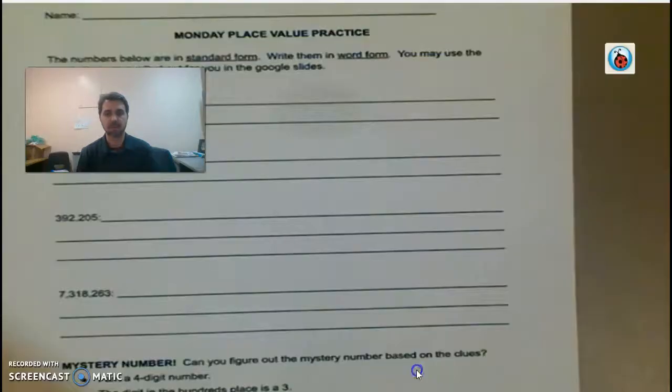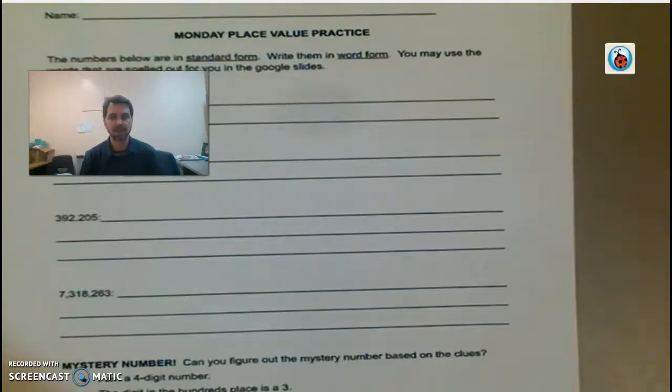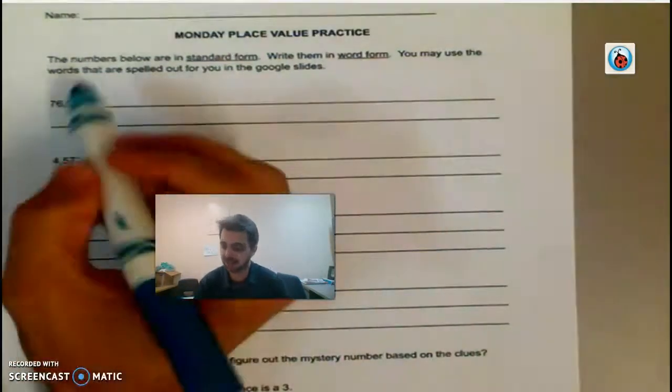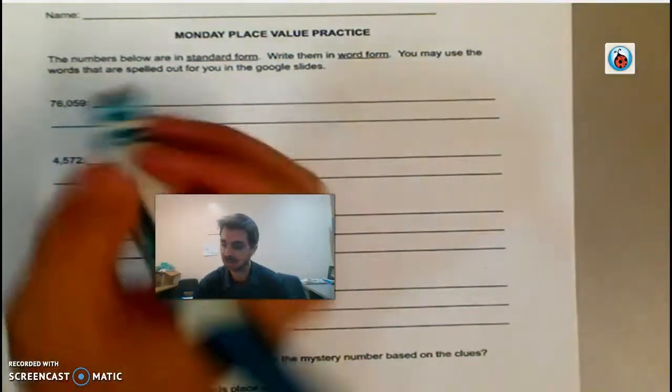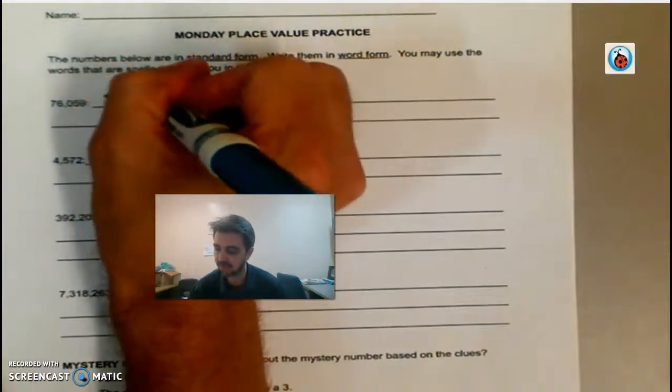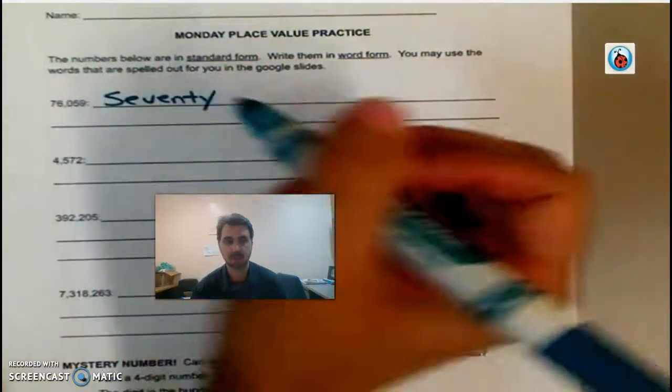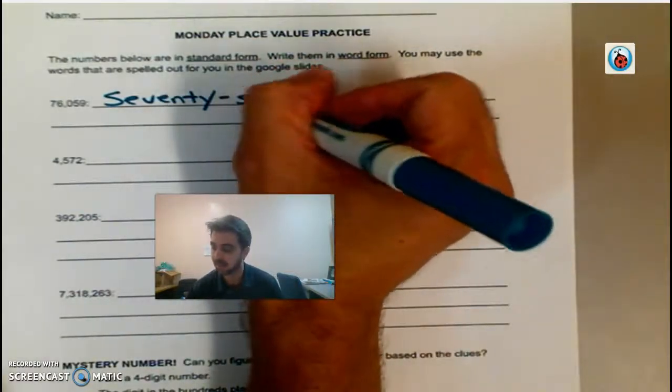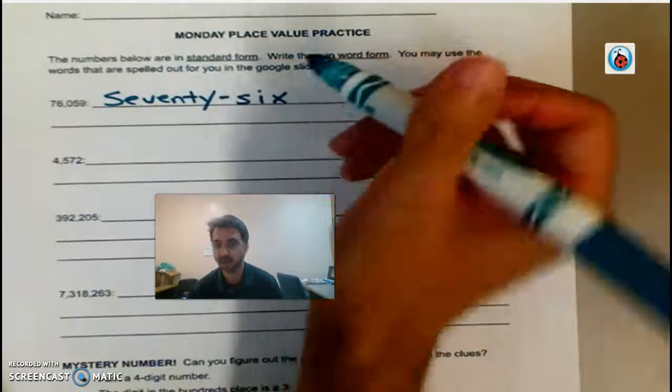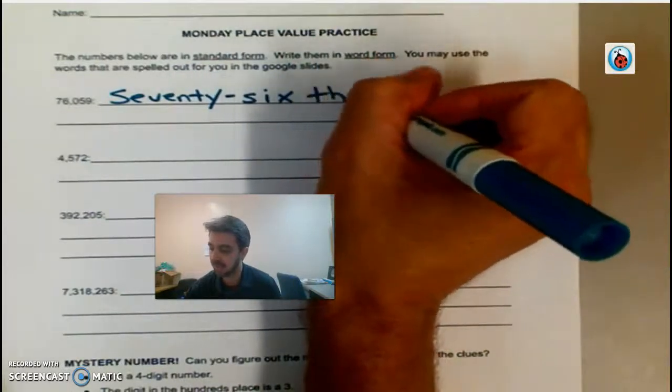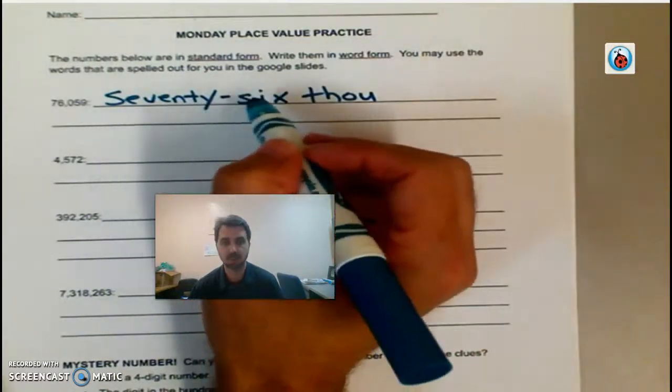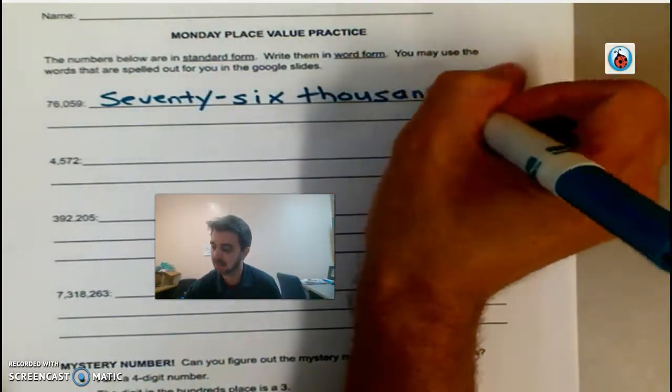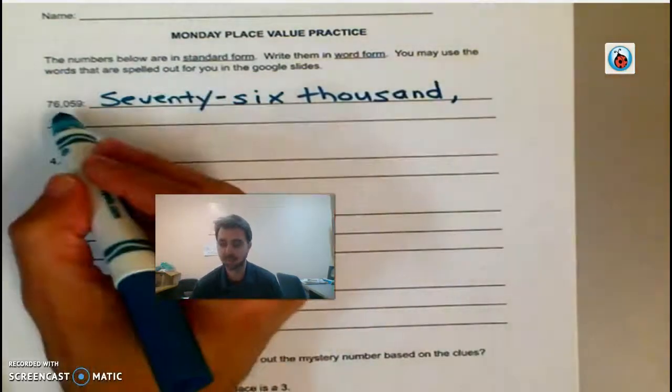Okay, so yeah, so what you'll do is, so I'll do the first one with you. So it says 76,059. So I would write 70, okay, and if I'm not sure how to spell 70, I can go back to that slide. 70, I put a little hyphen in there, okay, 76,000. It only goes between the tens and the ones place within a period, right? So 76,000, comma, just like there's a comma here.